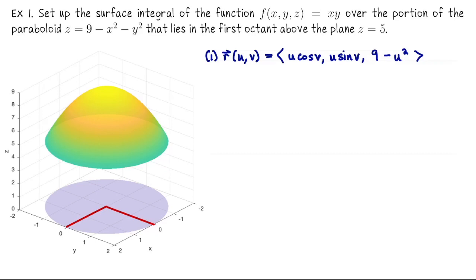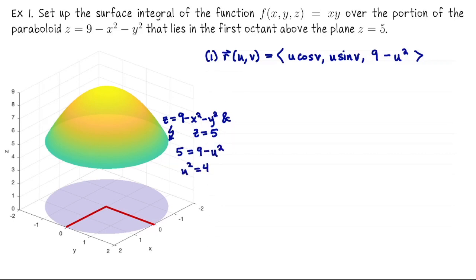To determine the bounds, let's look at the radius first. From the picture the radius is 2, but how do we figure that out? We need to know where the paraboloid intersects the plane Z = 5, since the edge of our disk shadow is directly underneath that intersection. Setting both Z = 9 − U² and Z = 5 gives 5 = 9 − U², so U² = 4, so U = 2. The bounds on U are 0 to 2. Since we want only a quarter disk in the XY plane, the angular parameter V goes from 0 to π/2.